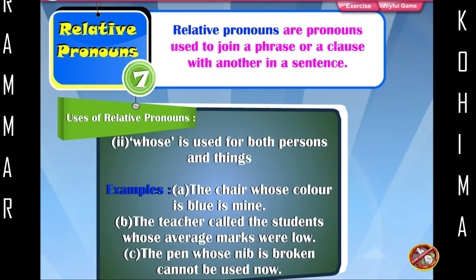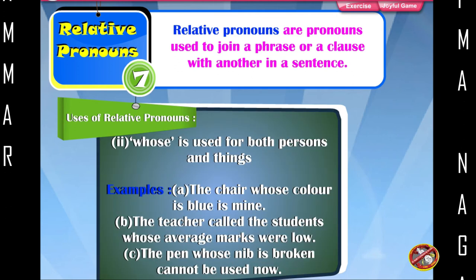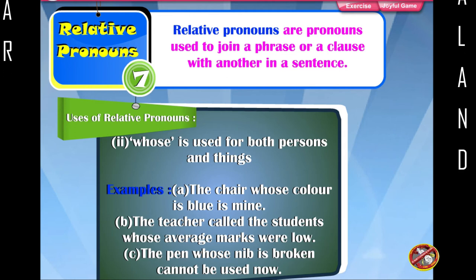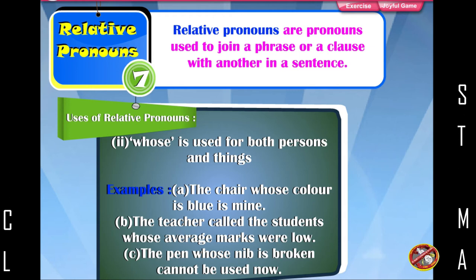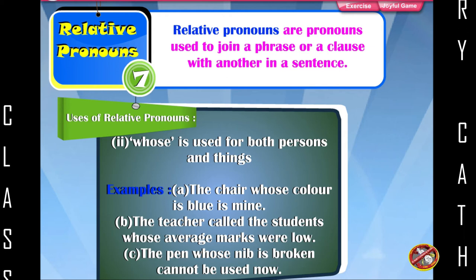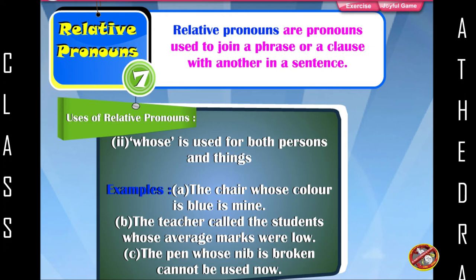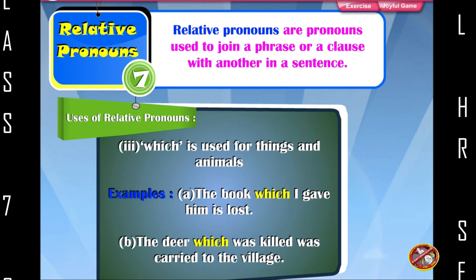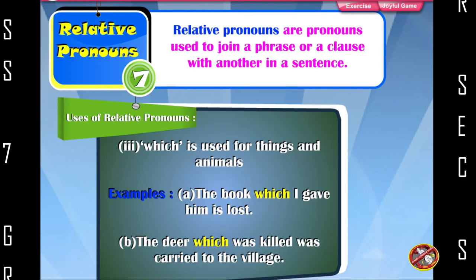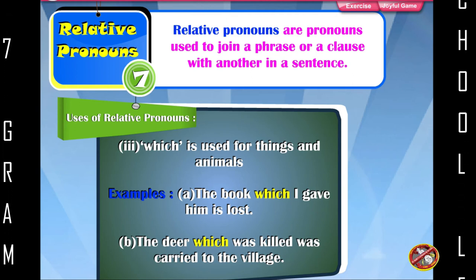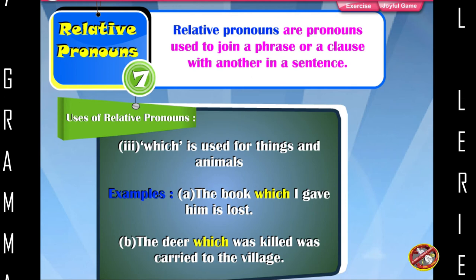Whose is used for both persons and things. Examples: The chair whose colour is blue is mine. The teacher called the students whose average marks were low. The pen whose rib is broken cannot be used now. Which is used for things and animals. Examples: The book which I gave him is lost. The deer which was killed was carried to the village.